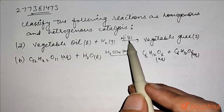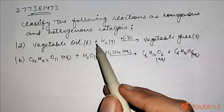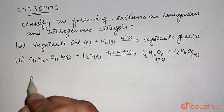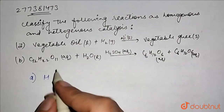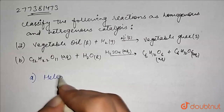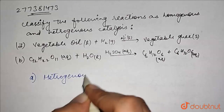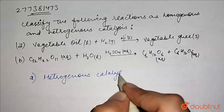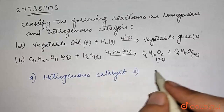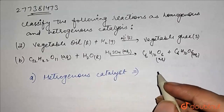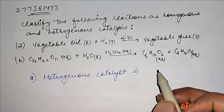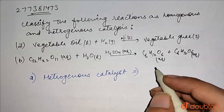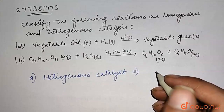So, if we look at the catalyst and the reactants, they are in different phases. That means this is a heterogeneous catalyst. Heterogeneous catalysts are catalysts where the reactants and the catalyst are in different phases.